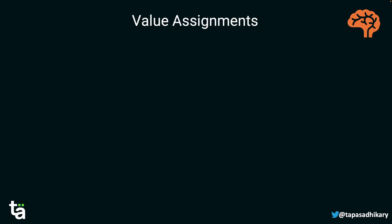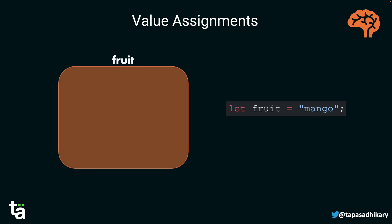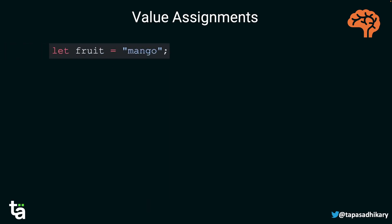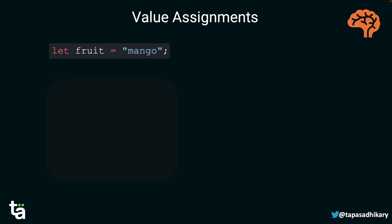Next, let's talk about value assignment. If we write `let fruit = 'mango'`, there is a storage named 'fruit' with value 'mango'. If in the next line we write `fruit = 'kiwi'`, we are assigning a new value to an already-declared variable. What happens? It simply replaces the old value with the new one — now the 'fruit' storage holds 'kiwi'.